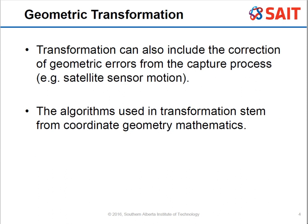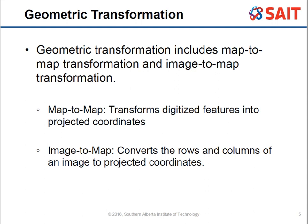The geometric transformation can also include the correction of errors, specifically geometric errors. Examples include satellite sensor motion, lens distortion, and atmospheric effects. There are algorithms to reduce these errors, and transformation equations are used to get the coordinates. It's very heavy in math, which we won't get into in this class, but the overview is what's important.